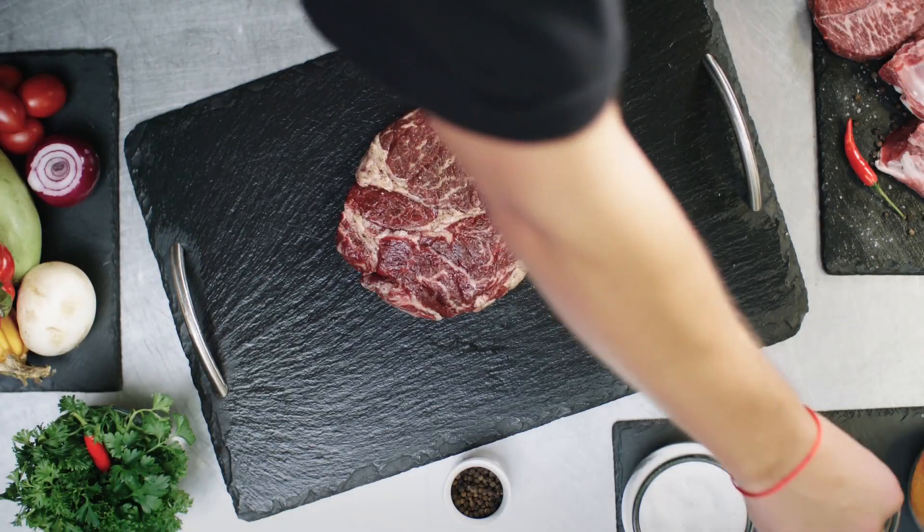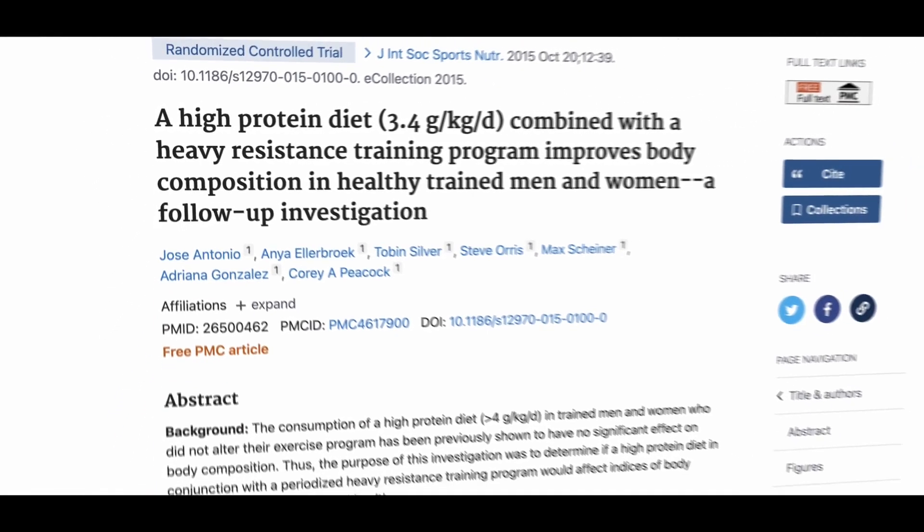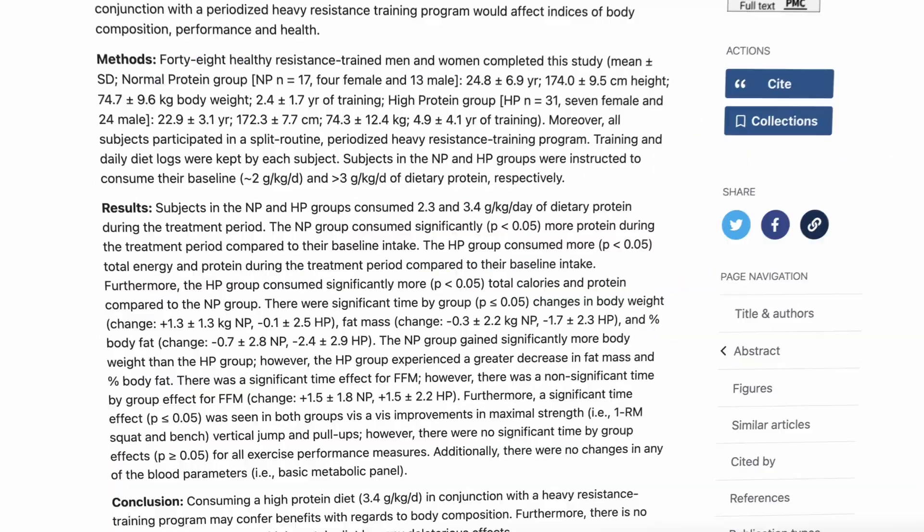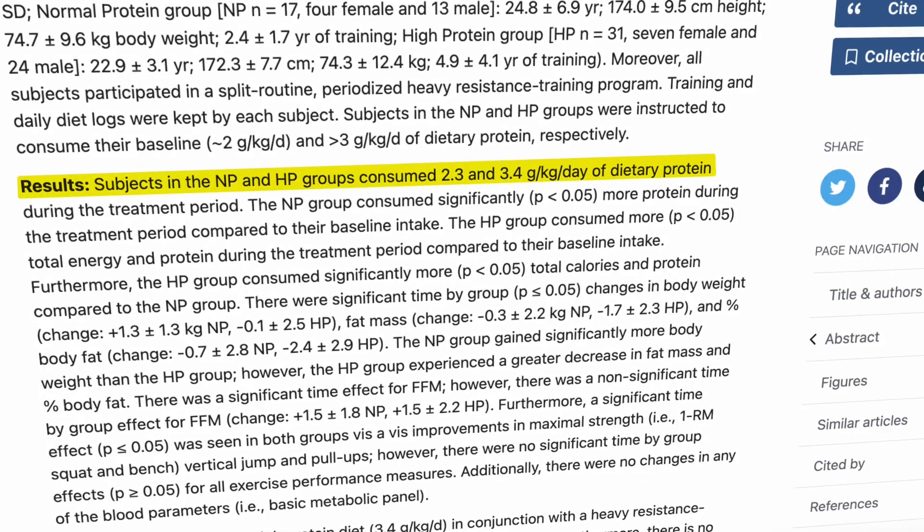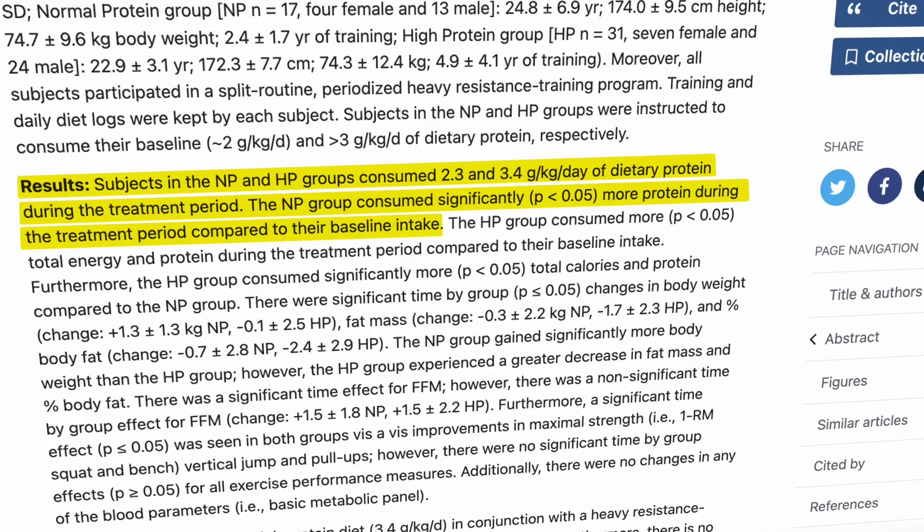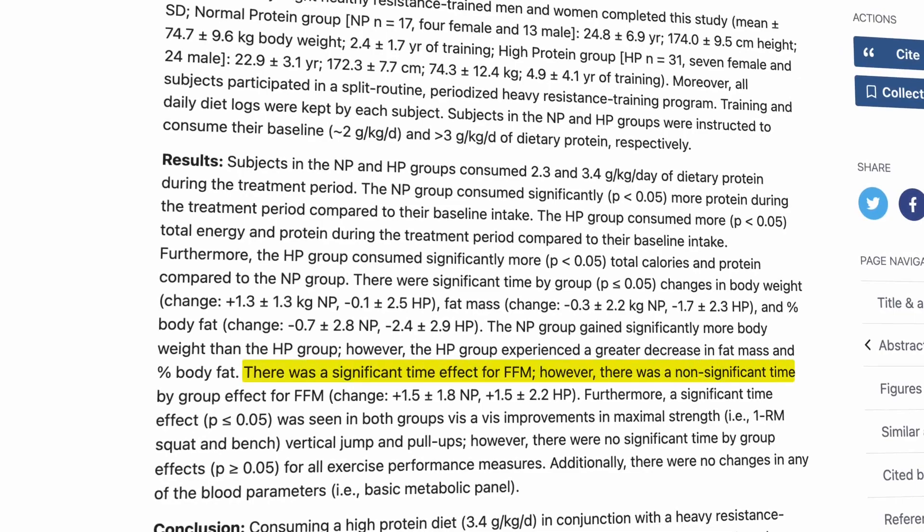Protein, however, has proven to be an absolute priority for individuals who would like to increase their muscle mass. A study in 2015 involved two participant groups: one normal protein intake group consuming 2.3 grams of protein per kilogram of body weight, and a high protein intake group consuming 3.4 grams per kilogram per day. After eight weeks, both groups gained the same amount of fat-free muscle mass, but the higher protein group reported higher fat loss than the normal protein group, even after eating a higher amount of calories.